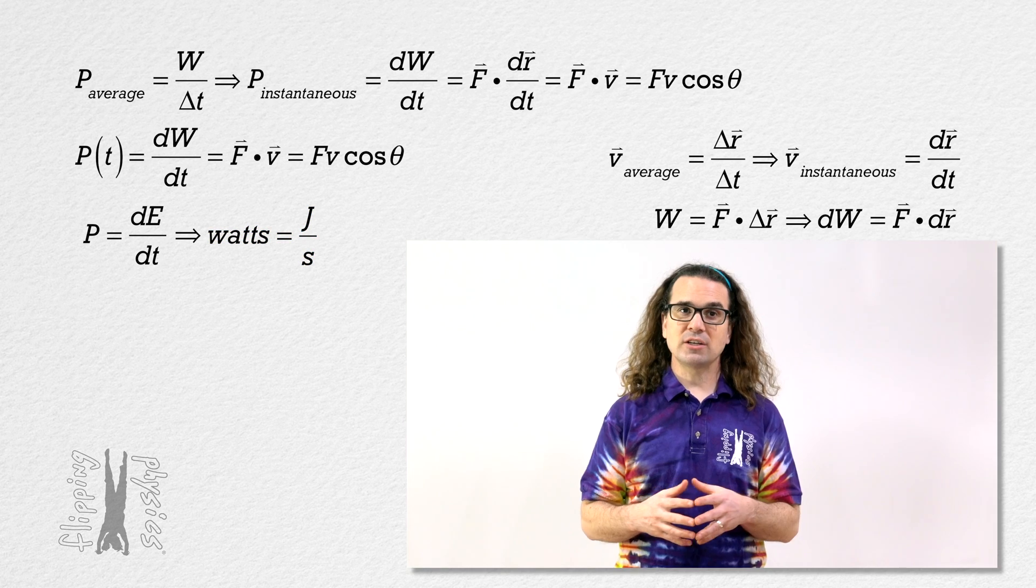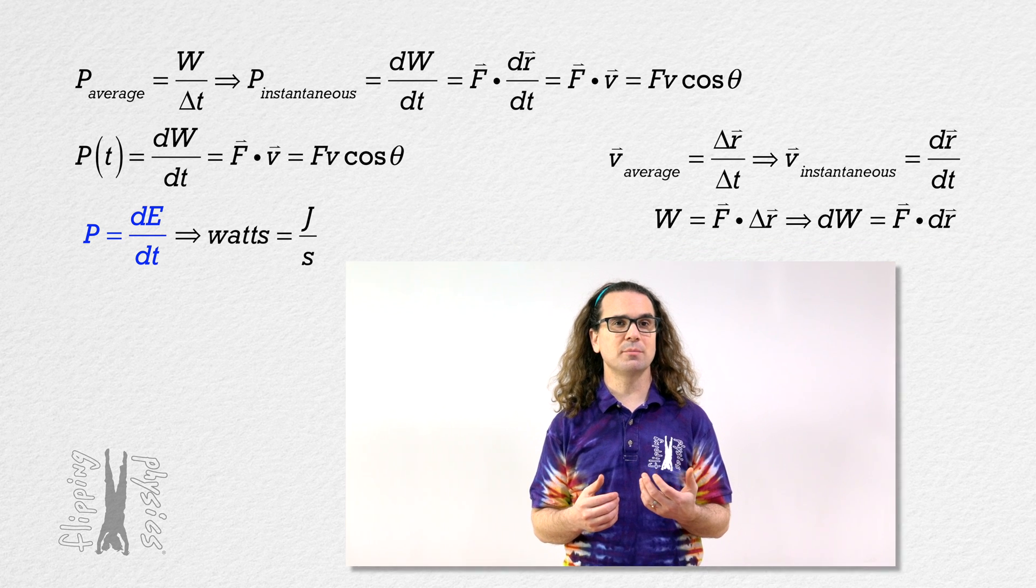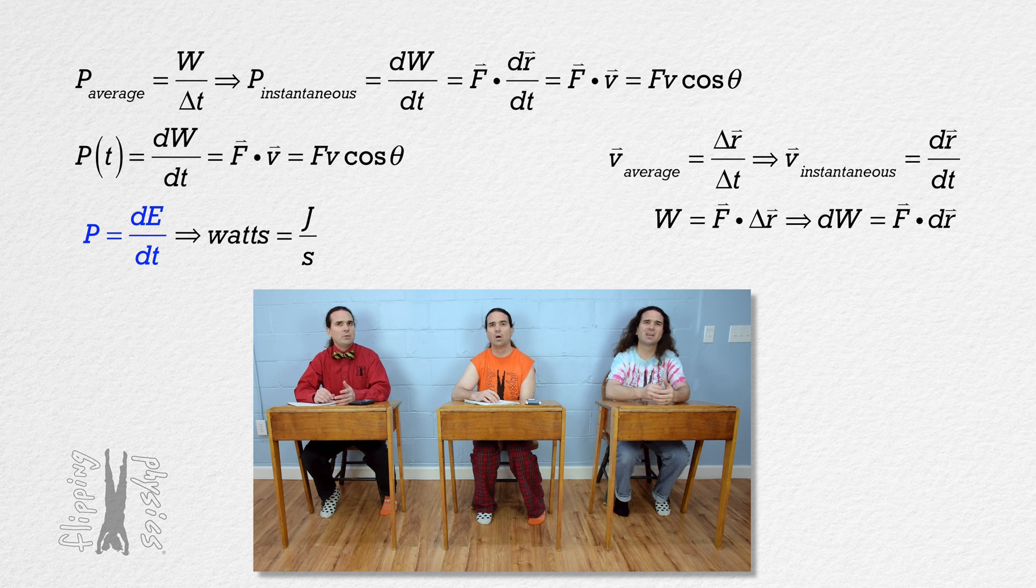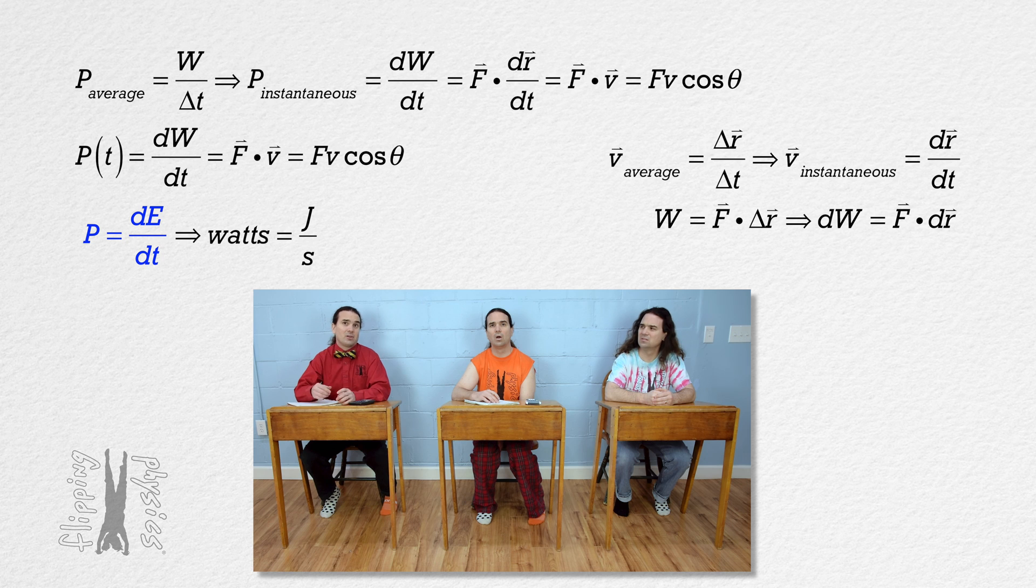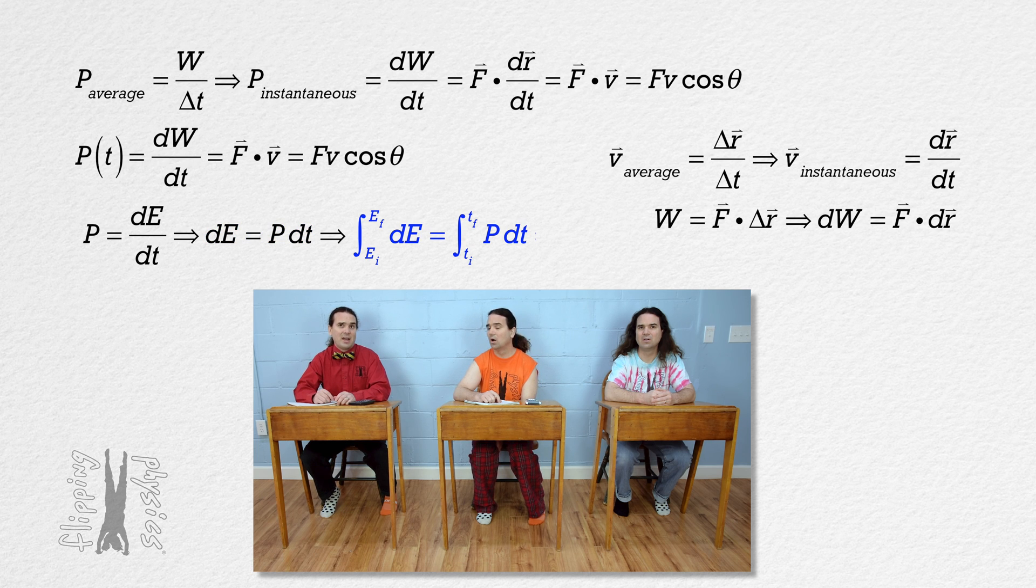Bo, please rearrange the equation power equals the derivative of energy with respect to time to form an integral. Rearrange the derivative definition of power to form an integral? What is that? Remember, any derivative can be rearranged to be an integral. No, that I do not remember. You multiply the derivative power equation by dt to get dE equals power times dt. And then you take the integral of both sides. Because the left side is with respect to energy,